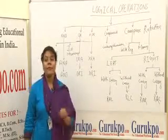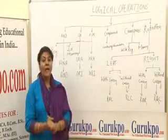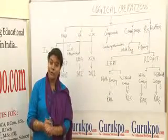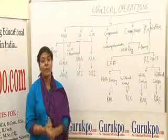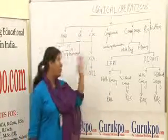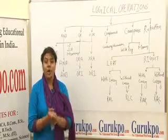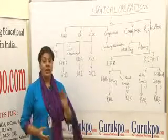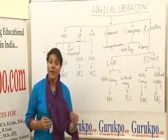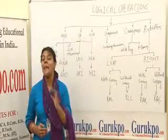Third, we come to the XOR operation. For XORing the data, we use the opcode XRA, and for immediate XORing, we use the opcode XRI. Similarly, the complement operation is just similar to a NOT gate operation, in which the content of the accumulator is complemented. The opcode for complement is CMA.